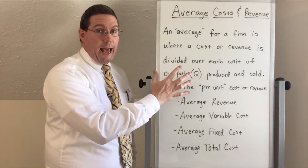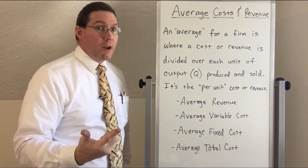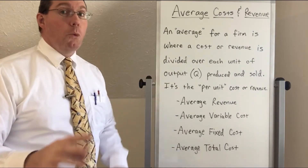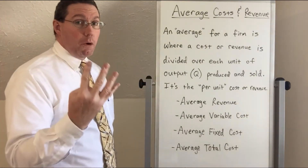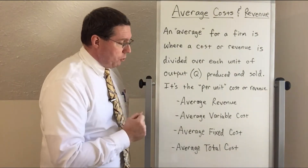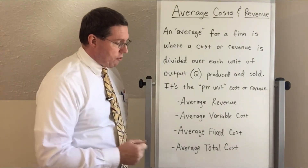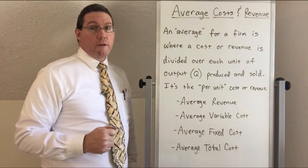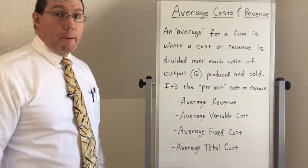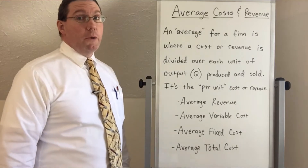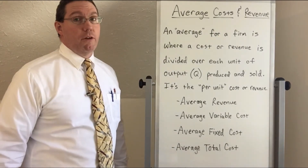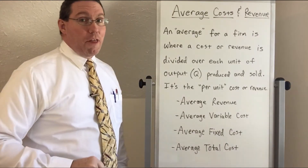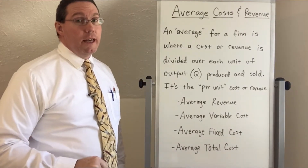When we calculate an average, we can interpret it as a per unit measure, and we are going to identify four of them: average revenue, average variable cost, average fixed cost, and average total cost. Now, you may be thinking — but we only had three more variables to look at, and that's four. We're going to get to the answer to that interesting curiosity in just a moment.